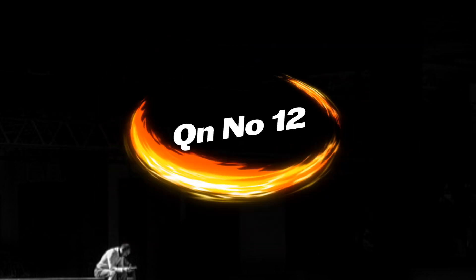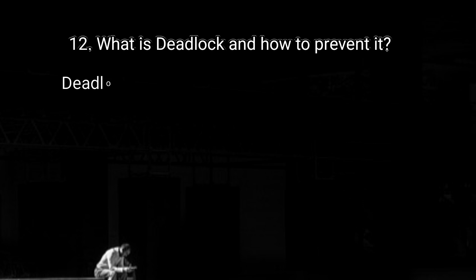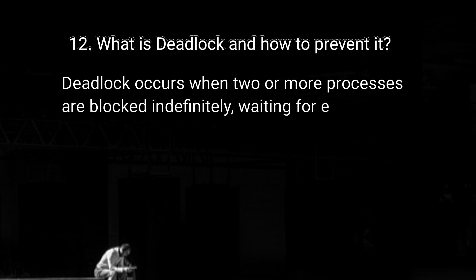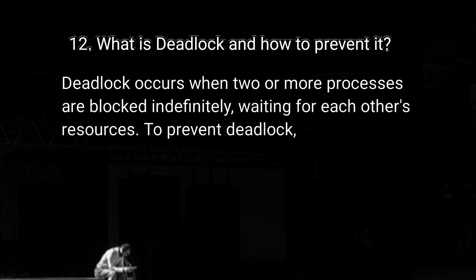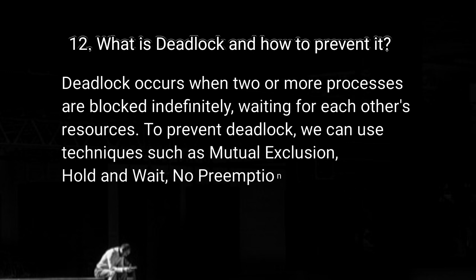Question number 12: what is deadlock and how do you prevent it? Deadlock occurs when two or more processes are blocked indefinitely, waiting for each other's resources. To prevent deadlock, we can use techniques such as mutual exclusion, hold and wait, no preemption, and avoiding circular wait.